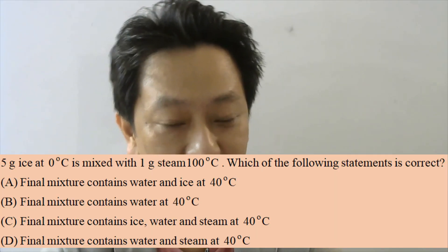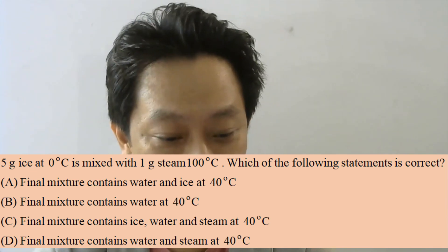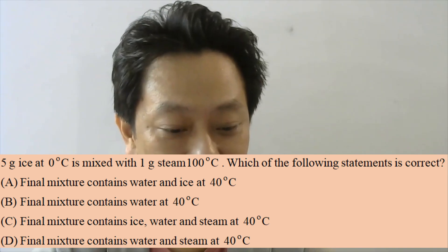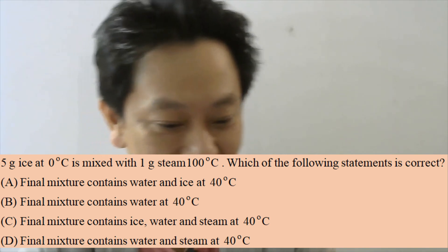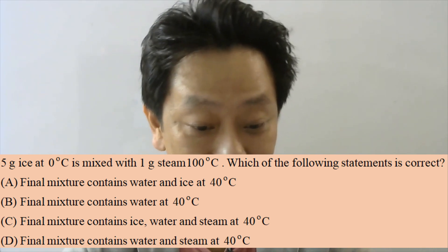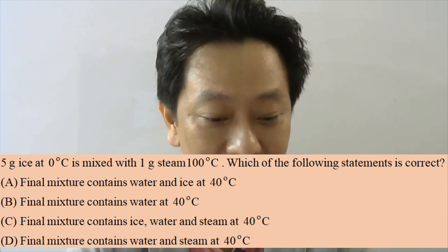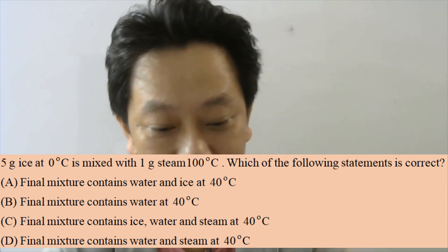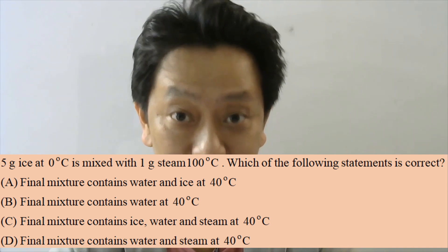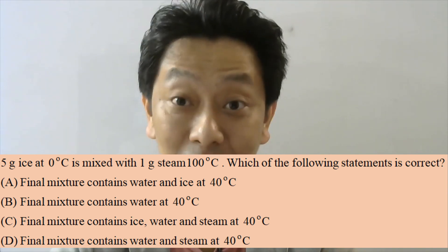Next question: 5 grams of ice at 0°C is mixed with 1 gram of steam at 100°C. Which statement is correct? Option A (water and ice at 40°C) is impossible since ice-water mixtures must be at 0°C. Option C (ice, water, and steam at 40°C) and D (water and steam at 40°C) are also impossible since steam implies 100°C. So the answer must be option B: final mixture contains water at 40°C.